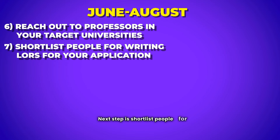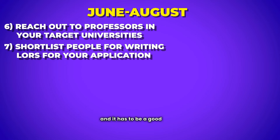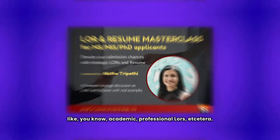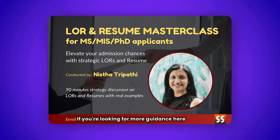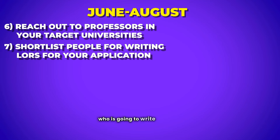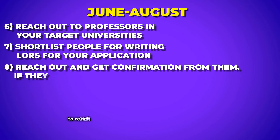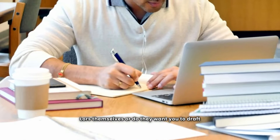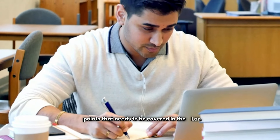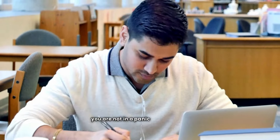Next, shortlist people to write your LORs. For masters in US you need three LORs — a good mix of academic and professional recommenders. We've covered this in detail in our LOR masterclass, so check that out for more guidance. In this time frame, get a clear idea of who will write your LORs and reach out to get their confirmation. If someone isn't available, have a backup. Ask them whether they'll write the LOR themselves or whether they'd like you to draft something or provide key points to cover — so you're not in a panic state later on.